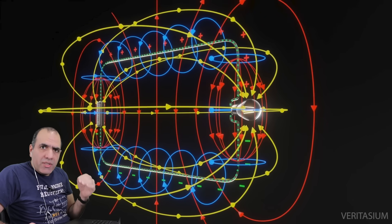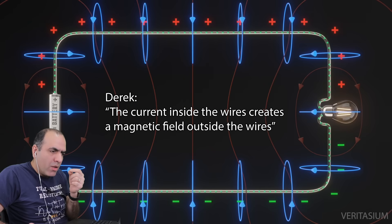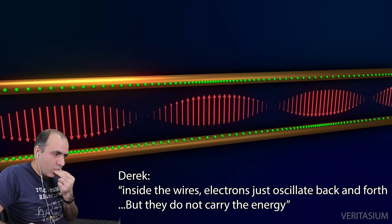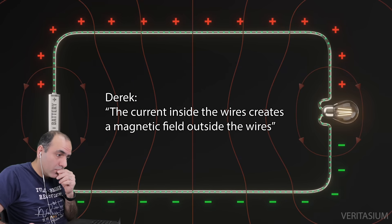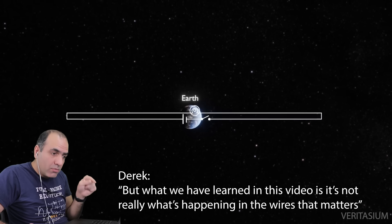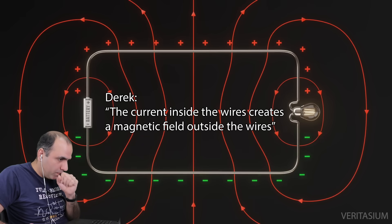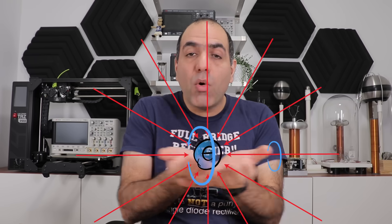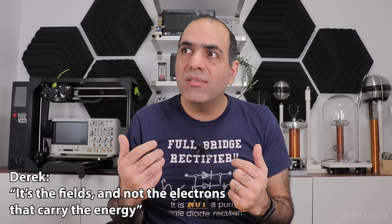Again, the frame of reference is important. A counter-argument is already in Derek's video. The current inside the wires creates a magnetic field outside the wires. So if flow of electrons creates magnetic fields, then why do we say inside the wires electrons just oscillate back and forth but they do not carry the energy? Yes, fields carry the energy, but the current inside the wires creates a magnetic field outside the wires. So to conclude that what we've learned in this video is it's not really what's happening in the wires that matters directly contradicts with the current inside the wires creates a magnetic field outside the wires. Electric fields are an inherent property of electrons or protons for that matter, creating electric fields around the wires. Motion of these charges creates magnetic fields around the wires, and then the fields carry the energy. So to say it's the fields and not the electrons that carry the energy sounds inaccurate.